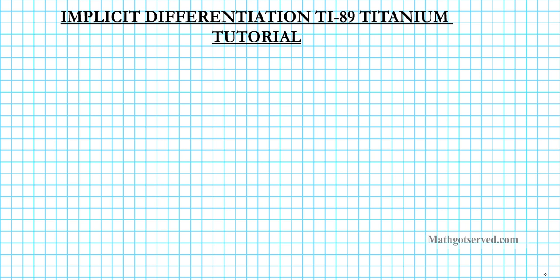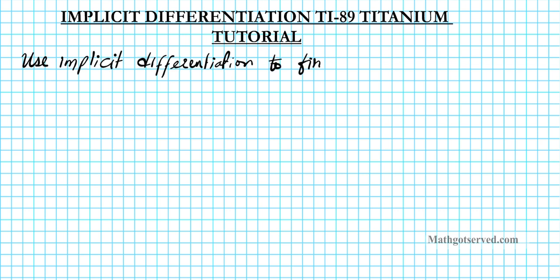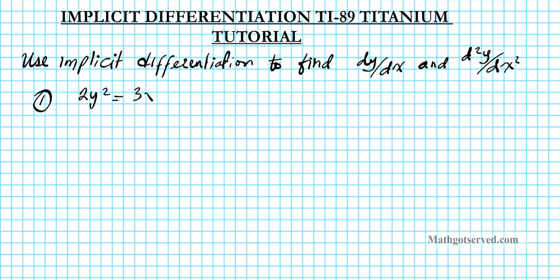Good day students. In this clip we are going to be going over an example on how to carry out implicit differentiation algebraically, and then how to use the TI-89 Titanium calculator to carry out the same computation. The task is to use implicit differentiation to find dy/dx and d²y/dx² for the implicitly defined function 2y² = 3x² + 4.